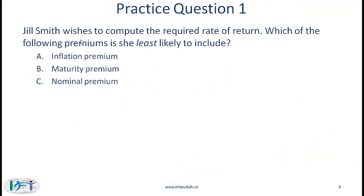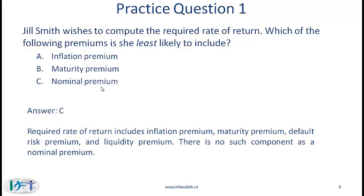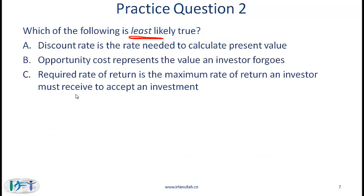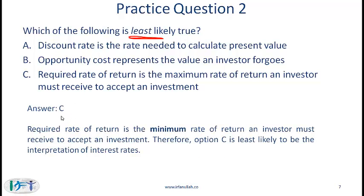Practice question: Jill Smith wishes to compute the required rate of return. Which of the following premiums is she least likely to include? The correct answer is C — nominal premium — because while it sounds like a plausible term, it is not included in the list of premiums. Make sure you know all the premiums well as you may see a question like this on the exam. For the next question, the correct answer is also C: the required rate of return is the minimum rate of return, so C is the least likely true statement.